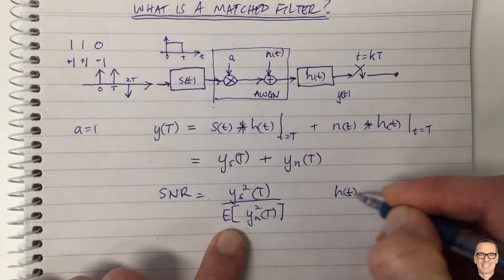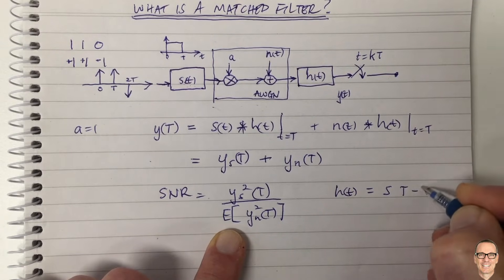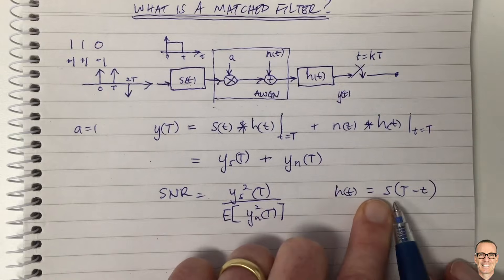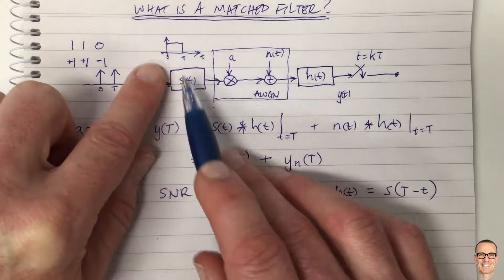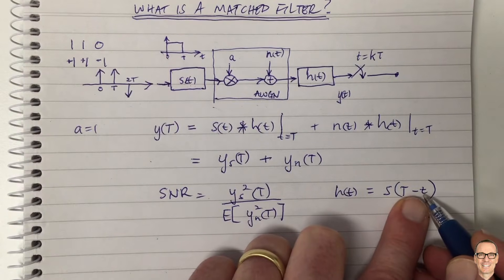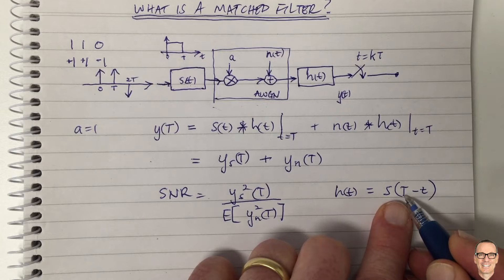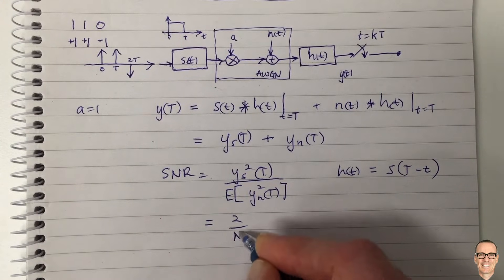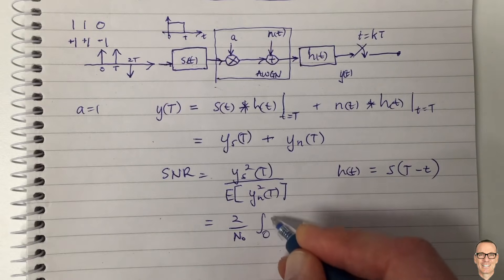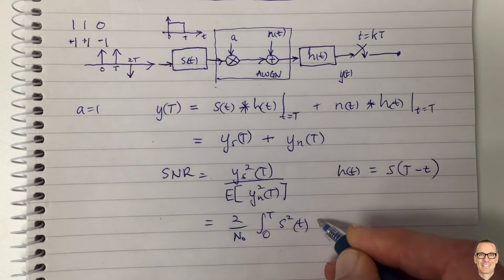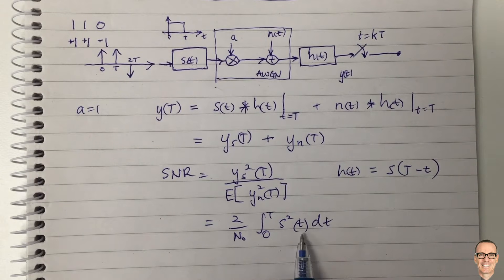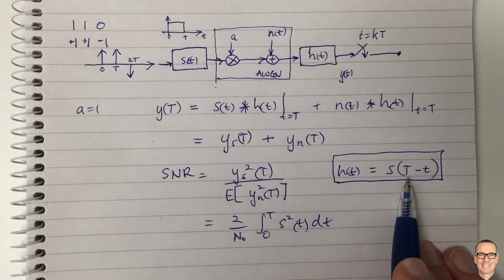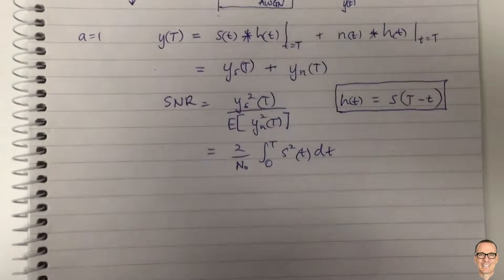What do we mean by matched? When H(t) equals S(T minus t) — when the impulse response of the receive filter has the same shape as the transmit filter, but with time reversed and shifted by T. In this case, the signal-to-noise ratio equals 2 divided by N₀ (the power spectral density of the noise) times the integrated energy of the signal over that period of time. This is the SNR when you choose the receive filter to have this form — and this is what we mean by the matched filter.